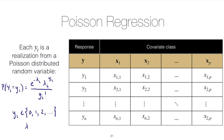Each rate parameter λi should be greater than 0. This specifies that our response is Poisson and that it is a count — specifically an unbounded count.